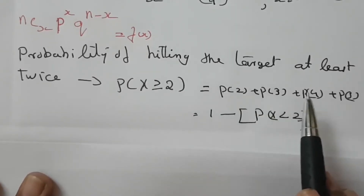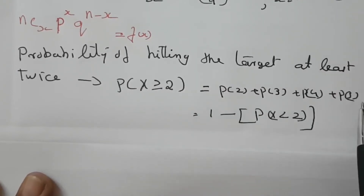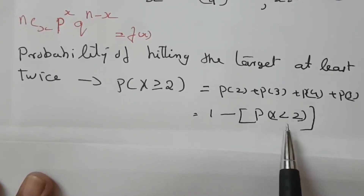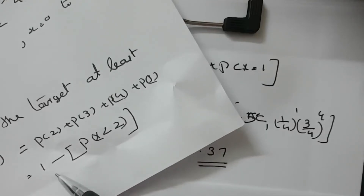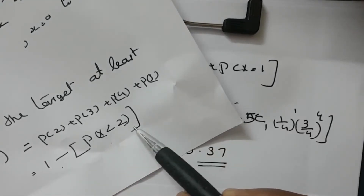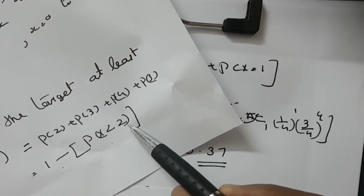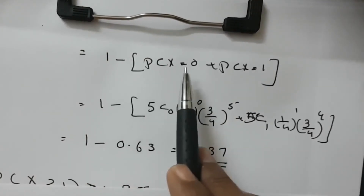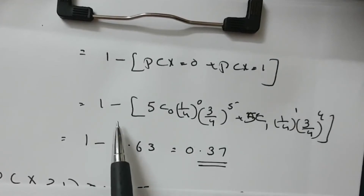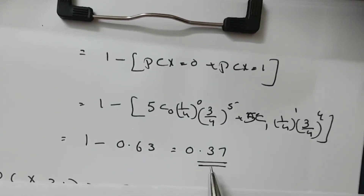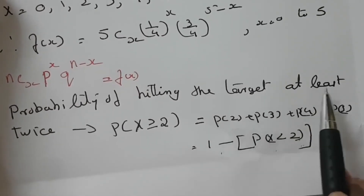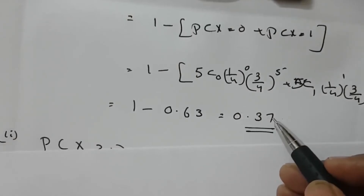P(X ≥ 2) equals P(2) + P(3) + P(4) + P(5). Since this is difficult to calculate directly, we rewrite it as 1 − P(X < 2), which equals 1 − [P(X = 0) + P(X = 1)]. That gives 1 minus this expression, which equals 0.37. So, the probability of hitting the target at least twice is 0.37.